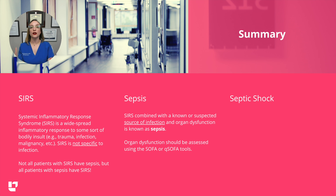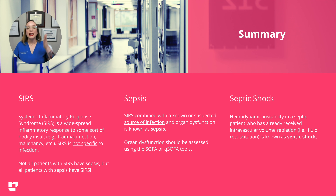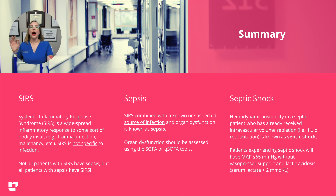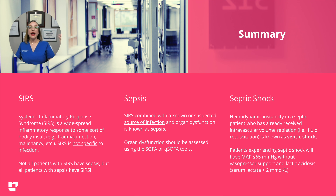Septic shock is the worst of all of these — it is very, very lethal. Septic shock is hemodynamic instability in a septic patient who has already received intravascular volume repletion, meaning fluid resuscitation. Patients with septic shock will have a MAP less than 65 without vasopressor support — they cannot maintain a MAP greater than 65 on their own — and they will have lactic acidosis, marked by a serum lactate level greater than 2 millimoles per liter. All of these things can be really detrimental and deadly.